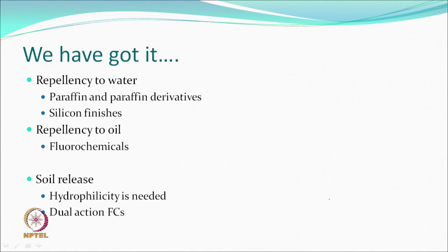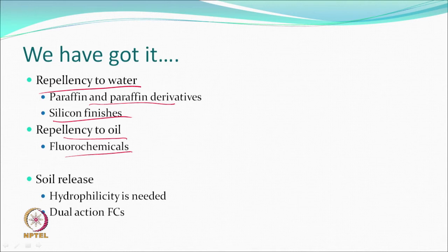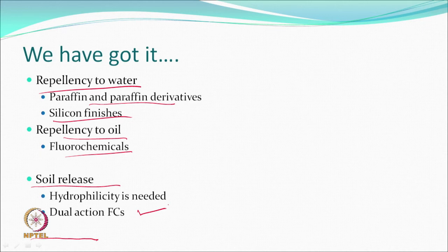Repellency can be achieved by paraffin derivatives and silicon finishes; repellency to oil can be done by fluoro chemicals. But soil release requires hydrophilicity on the surface — that is a very important lesson. Cotton fabrics are hydrophilic, therefore soil release is easy. For release, hydrophilicity is a good idea because we are washing in an aqueous detergent solution, which is a hydrophilic environment. In this respect, the dual action fluorochemicals can work much better.